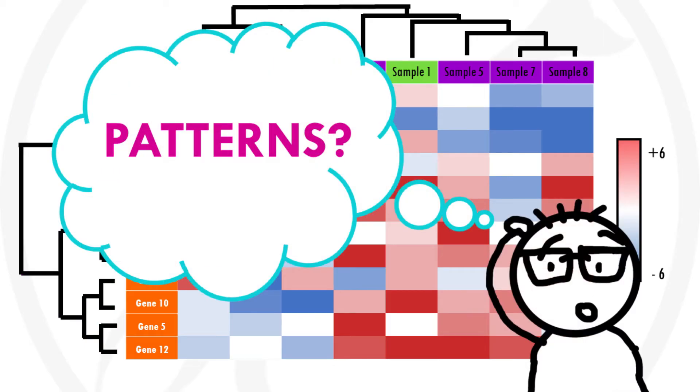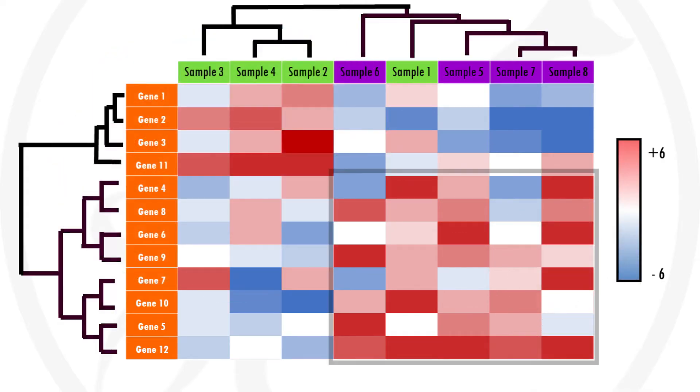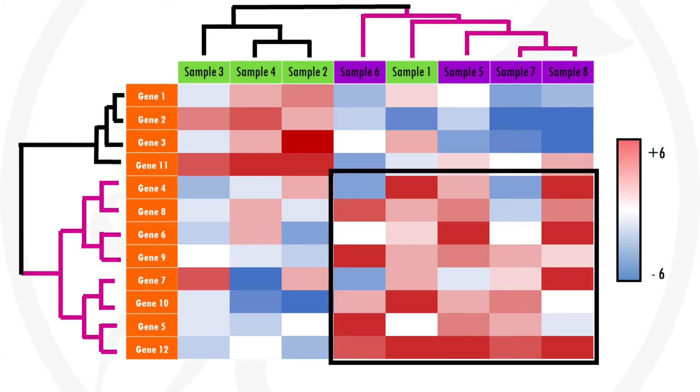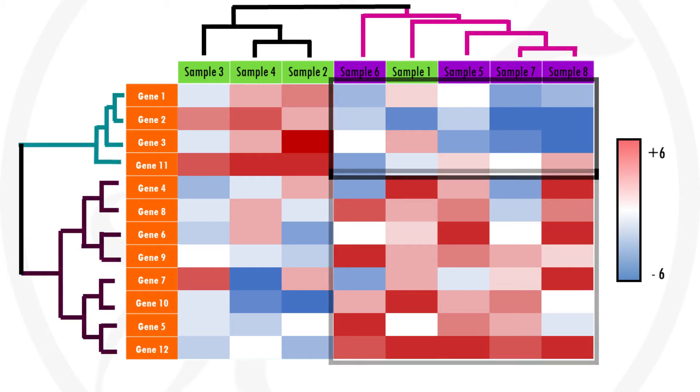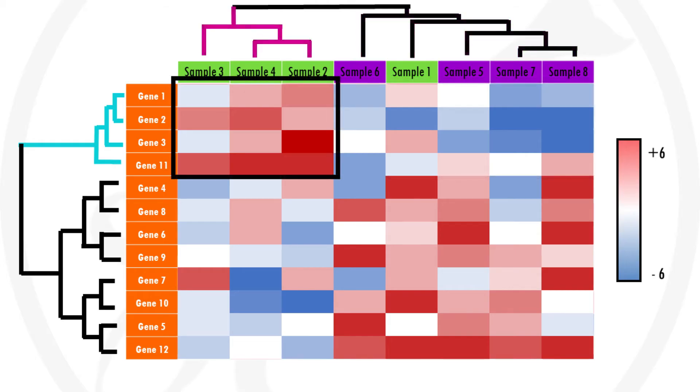But what about the patterns we were talking about earlier? Clustering helps us identify samples that are more similar to each other based on their overall gene expression patterns. For example, the second group of samples over here has a general up-regulation of this gene set highlighted in pink, but a general down-regulation of this other gene set highlighted in blue. The blue gene set is on the other hand up-regulated in the first group of samples.